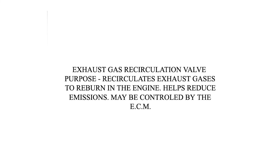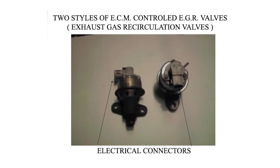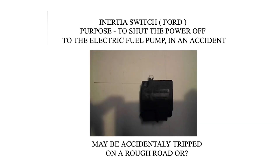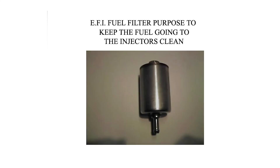Exhaust gas recirculation valve purpose: recirculates exhaust gases to re-burn in the engine to help reduce emissions; may be controlled by the ECM in two styles. Miscellaneous fuel injection components include the inertia switch — purpose: to shut power off to the electric fuel pump in an accident, though it may be accidentally tripped on a rough road — and the EFI fuel filter, purpose: to keep the fuel going to the injectors clean.